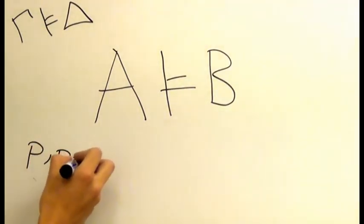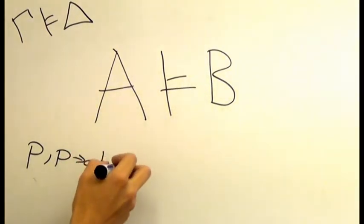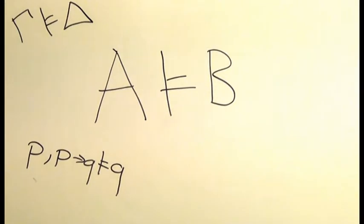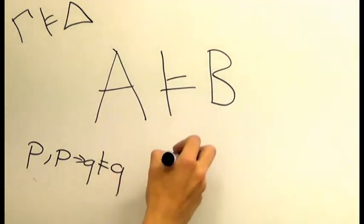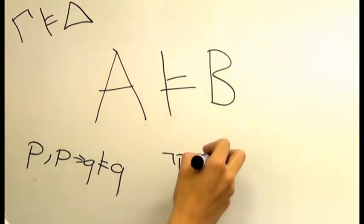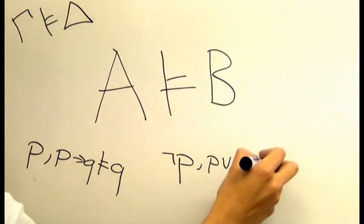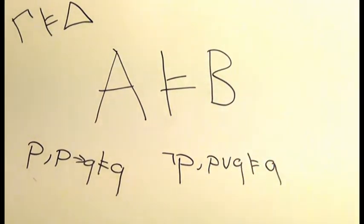This is often called a sequent, or a schema. Our turnstile is separating our premise from our conclusion. There are many different forms of this statement, but they basically all mean the same. The formulas on the left make the formula on the right true. Or to state it negatively, it is not possible for all formulas on the left to be true while the formula on the right is false.